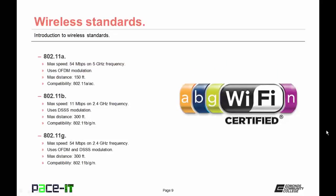First up is 802.11a. It has a maximum speed of 54 Mbps and operates on the 5 GHz frequency band. It uses OFDM as its form of modulation and has a maximum distance of 150 feet. 802.11a is compatible with 802.11ac. Then there's 802.11b, which has a maximum speed of 11 Mbps and operates on the 2.4 GHz frequency band. 802.11b uses DSSS as its technique for modulation, has a maximum distance of 300 feet, and is compatible with 802.11g and 802.11n.